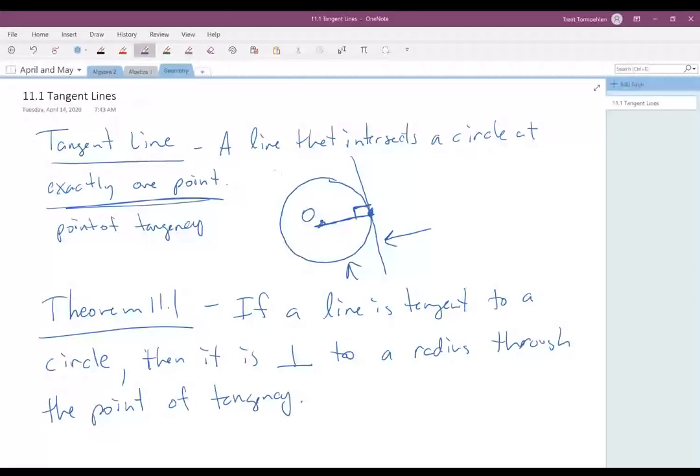And so that is a theorem that we're going to use over and over again in this idea of circles: if there is a tangent line, if I connect it to the center of the circle, the point of tangency, then I have a right angle.